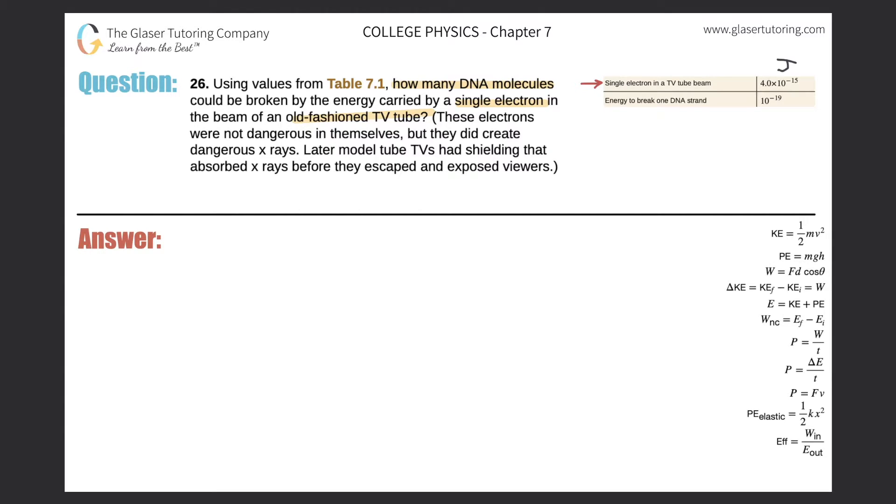So this is basically saying 4.0 times 10 to the minus 15 joules per single electron, per one electron.